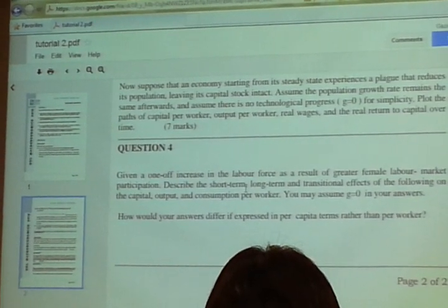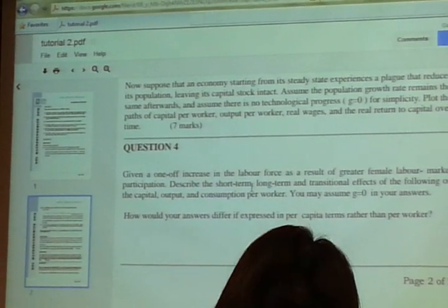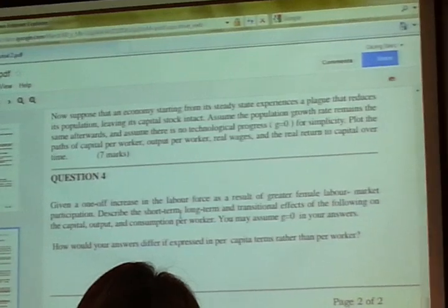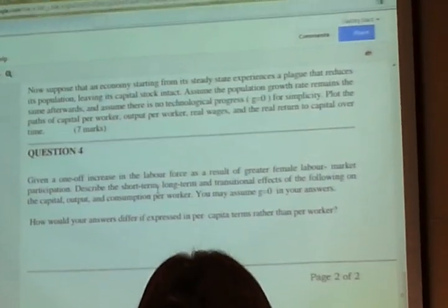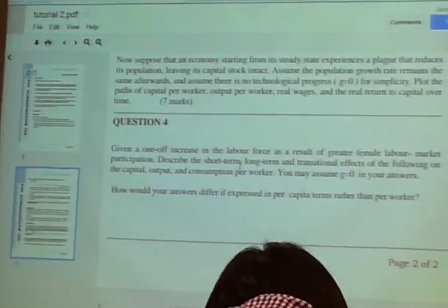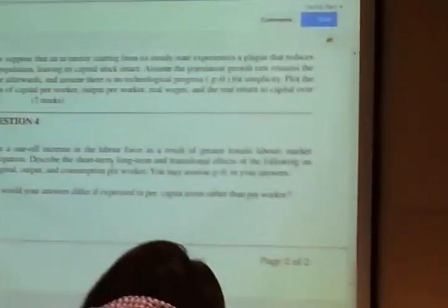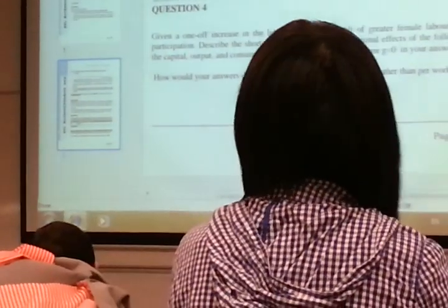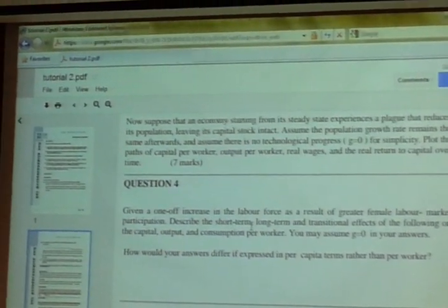Just like our tutorial one, part C. They will always ask you to change the model. So the question says there was a one-off increase in labor force. The key word in the question is one-off. One time only. So it's not population growth. Population growth is for every period. This is only a one-time increase in your L because of more women joining the workforce. So describe the short-term, long-term and transition effects on capital output and consumption per worker. You may assume G equals to zero. The G used in the exam is always technology. So as you read this question, you're thinking gosh, what curve do you shift? Then how would your answers differ if now expressed in per capita terms rather than per worker? So let's look back at this question. Doesn't look tough, but couldn't really fathom what the question wanted.